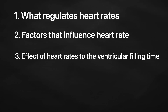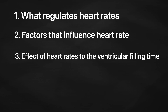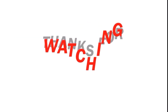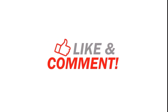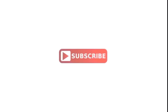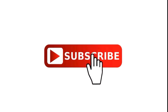Alright, to summarize the correlation between heart rates and cardiac output, there are three points to understand. Number one: what regulates the heart rate. Number two: factors that influence heart rates. And number three: the effect of heart rates on ventricular filling time. That's it for this video. In our next lesson, let's discuss stroke volume as a determinant of cardiac output. Thank you!